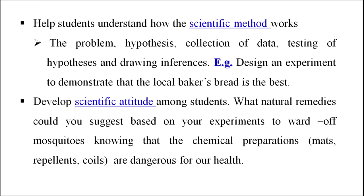Projects help students understand the scientific method — the method scientists use — starting with the problem: What is the problem? How do I formulate a hypothesis? What relationships do I want to establish? How do I collect data? How do I test the hypothesis? Note that we either accept or reject a hypothesis — we do not prove them right or wrong. For example: design an experiment to demonstrate that the local baker's bread is the best.